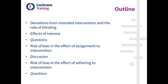Here's an outline of what we're going to talk about. We'll start by introducing the ideas of what deviations from intended interventions are and talk a bit about the role of blinding. A particularly interesting and unique aspect of this domain is that we have different versions according to the effect that we're interested in estimating from each study, so we'll talk a bit about what those effects of interest are.